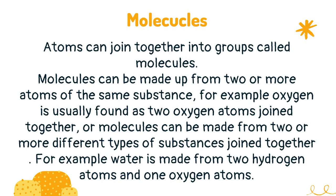Atoms can join together into groups called molecules. Molecules can be made up from two or more atoms of the same substance. For example, oxygen is usually found as two oxygen atoms joined together. Or molecules can be made from two or more different types of substances joined together. For example, water is made from two hydrogen atoms and one oxygen atom.